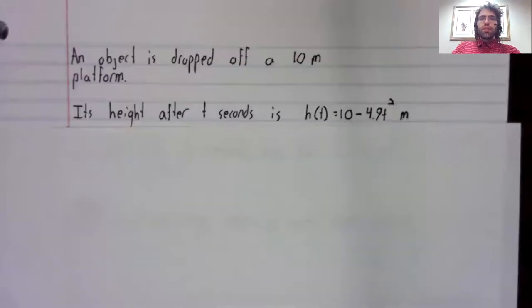Let's see an example of this in action. In particular, say an object is dropped off of a 10 meter platform. Then if we neglect air resistance, its height from the ground after t seconds is 10 minus 4.9t squared.